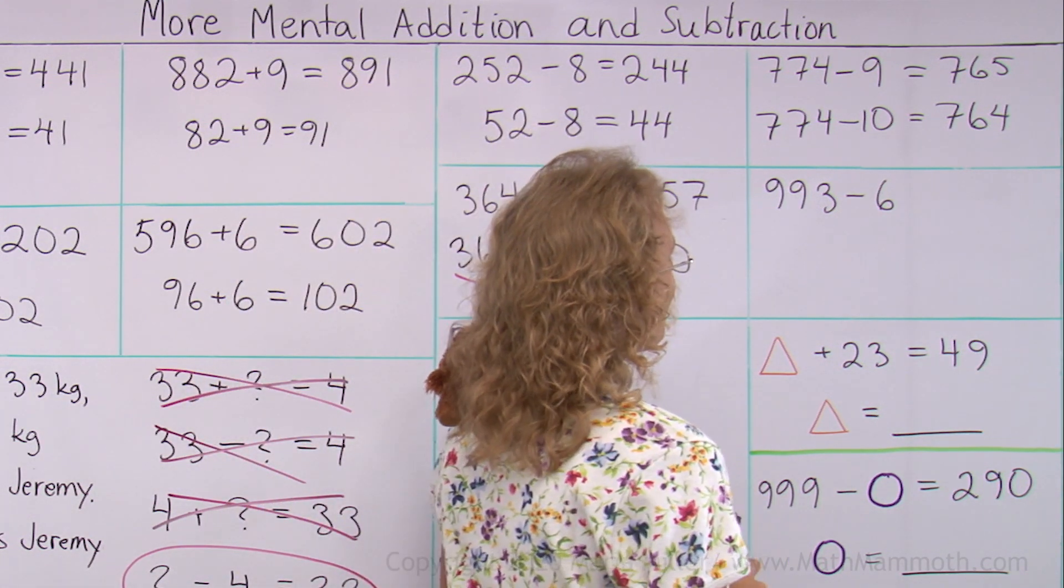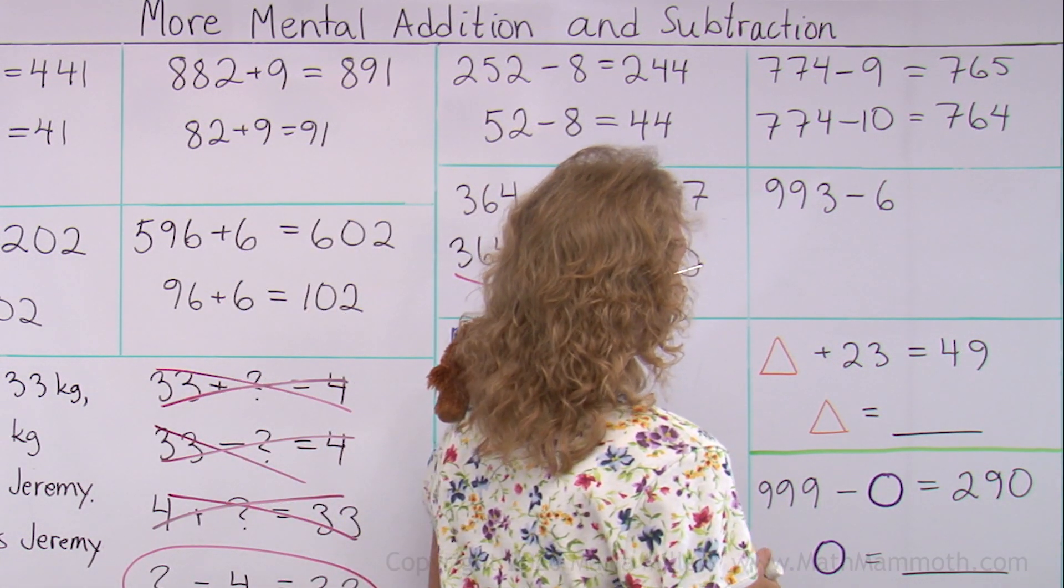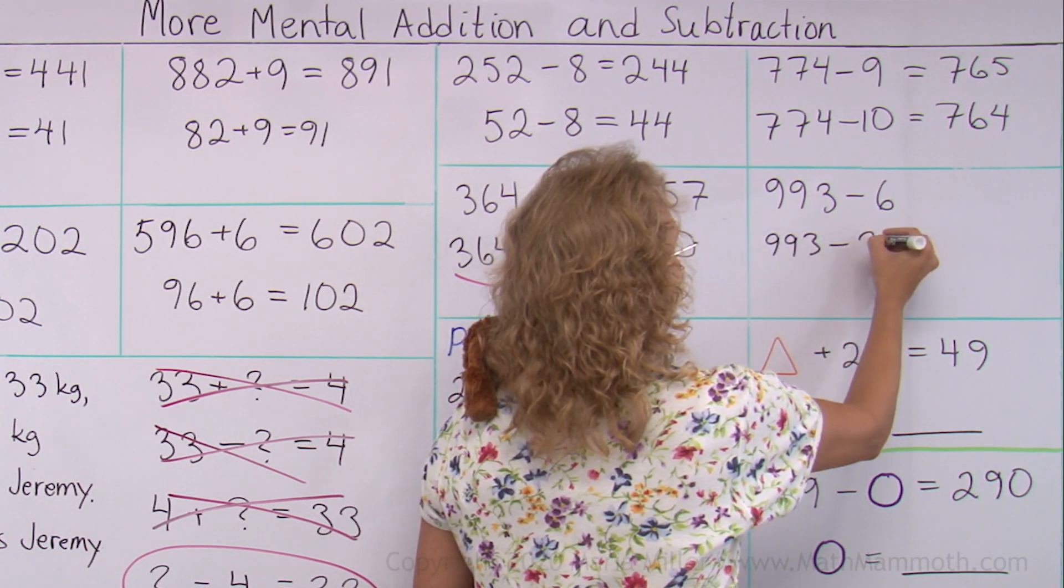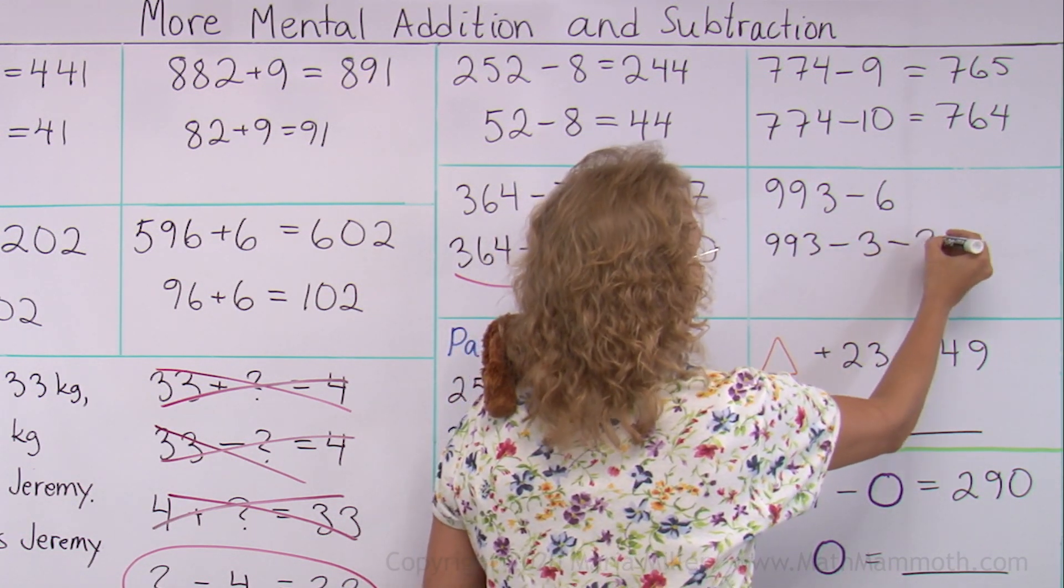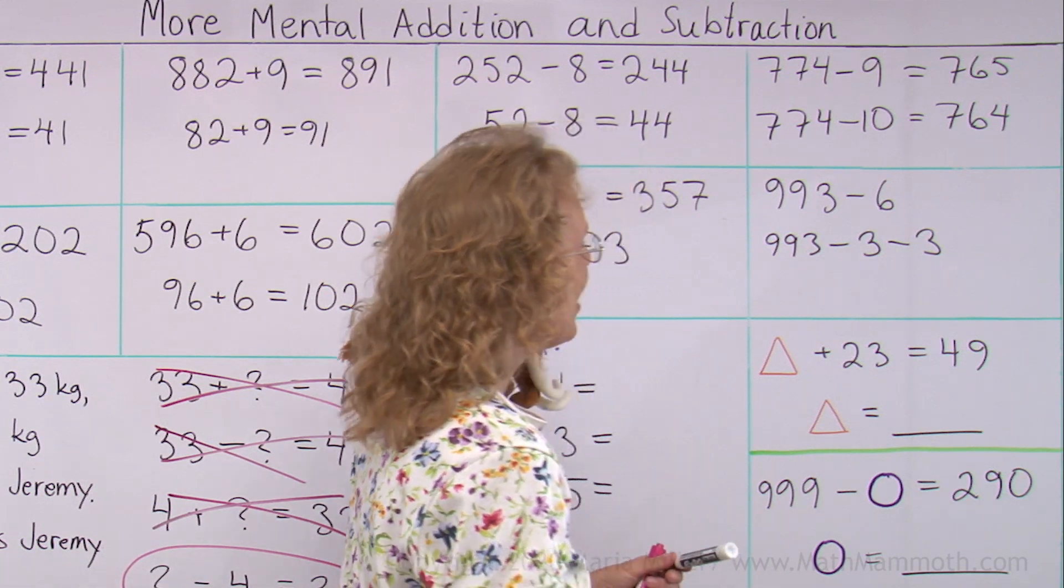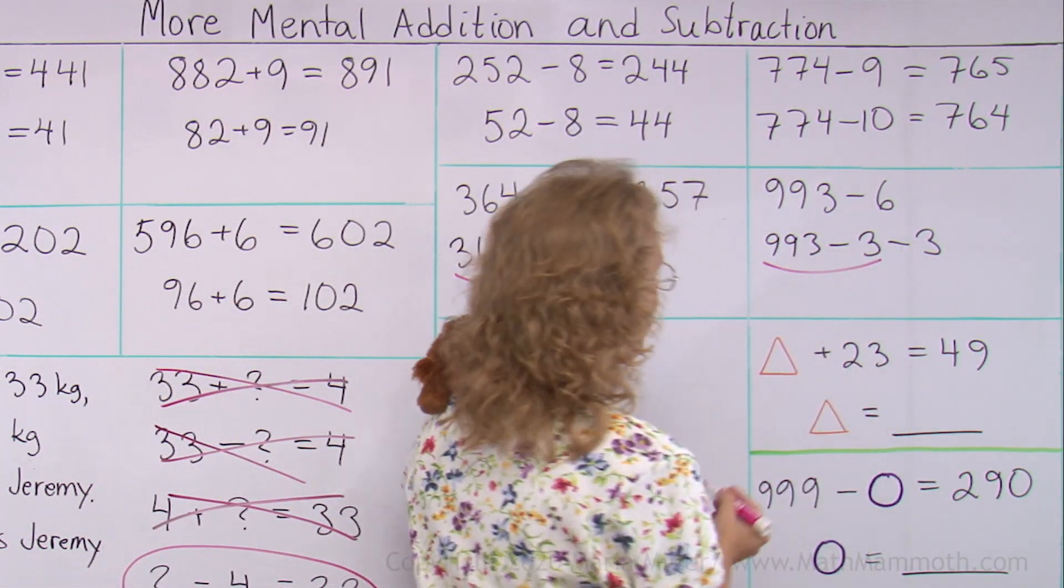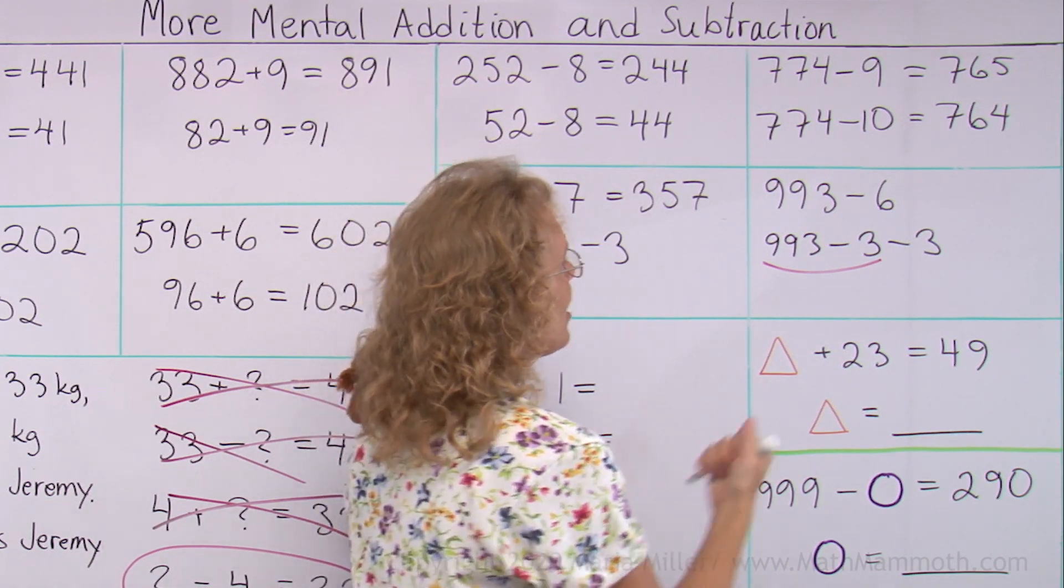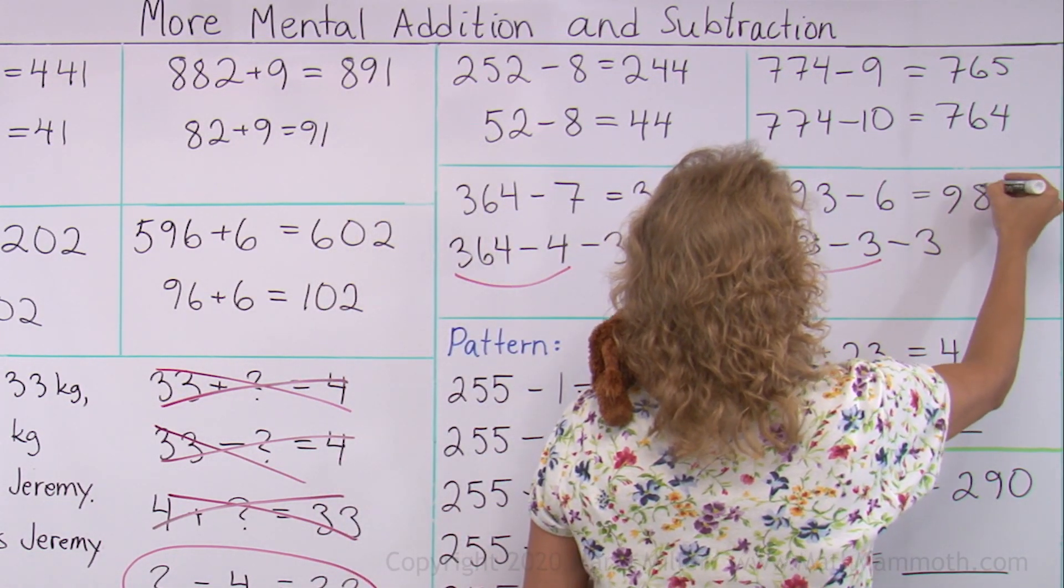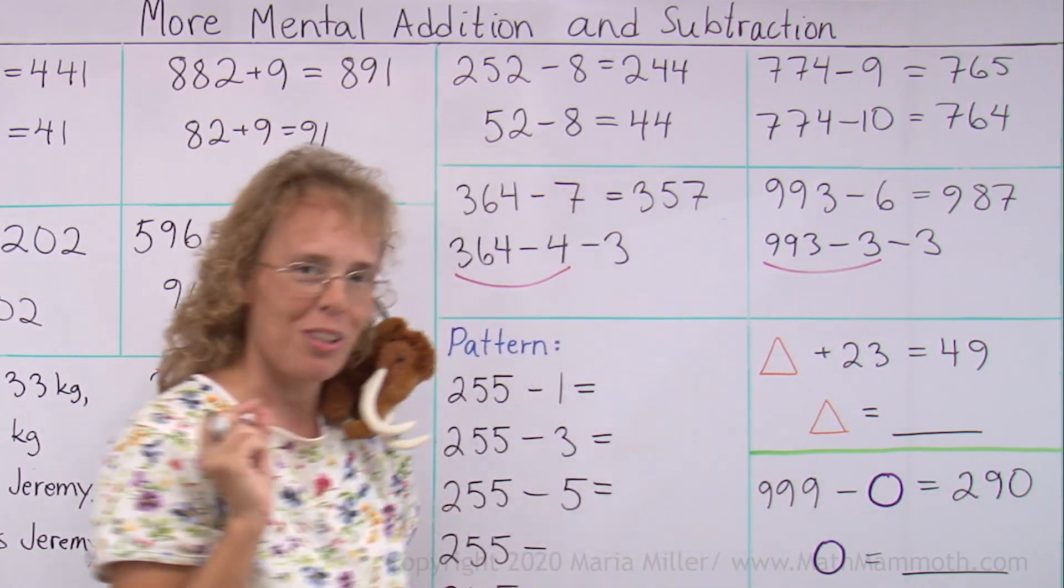993 minus 6. Okay. Let's do the same. First subtract 3. Then another 3. So it becomes 990. This one here. Minus 3. 990 minus 3. So 987. I hope you're following me.